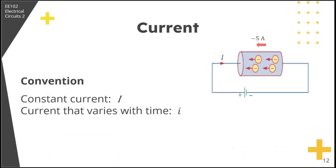By convention, we use the symbol I (capital I) to represent a constant current. If the current varies with respect to time — whether AC or time-varying DC — we use the small i. Since current is the flow of charge, it has an associated direction of flow. The direction of current flow is conventionally taken as the direction of positive charge movement — from the positive terminal of the source to the negative terminal.